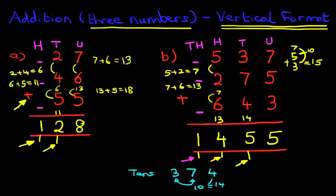537 plus 275 plus 643 is 1,000, we can even put a comma here, 1,455.